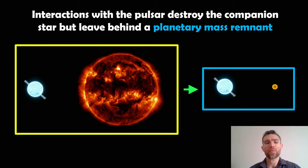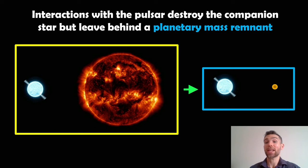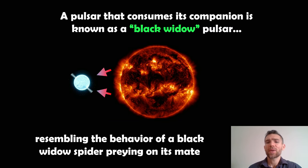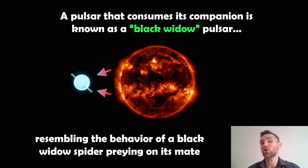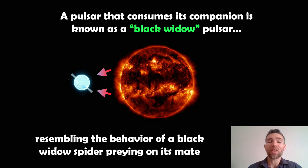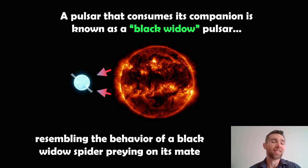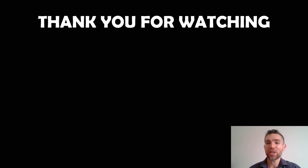The last scenario involves the pulsar and its binary companion again, but this time the pulsar basically consumes and destroys its companion star, leaving behind a planetary-mass object. This pulsar consumes the star a bit like a black widow spider would — so they're called black widow pulsars, named after the spider's behavior toward its mate. They leave behind a planetary-mass remnant, though it's not technically a planet since it's most likely the central remnant of the companion star. Thank you for watching, and if you have questions for future videos, just leave them in the comments.